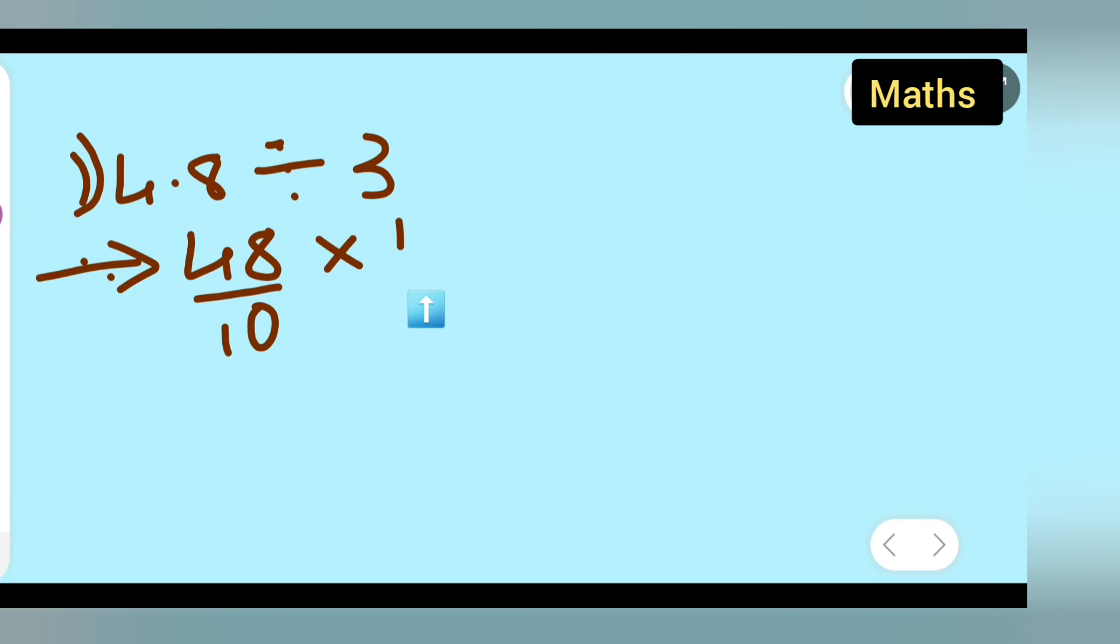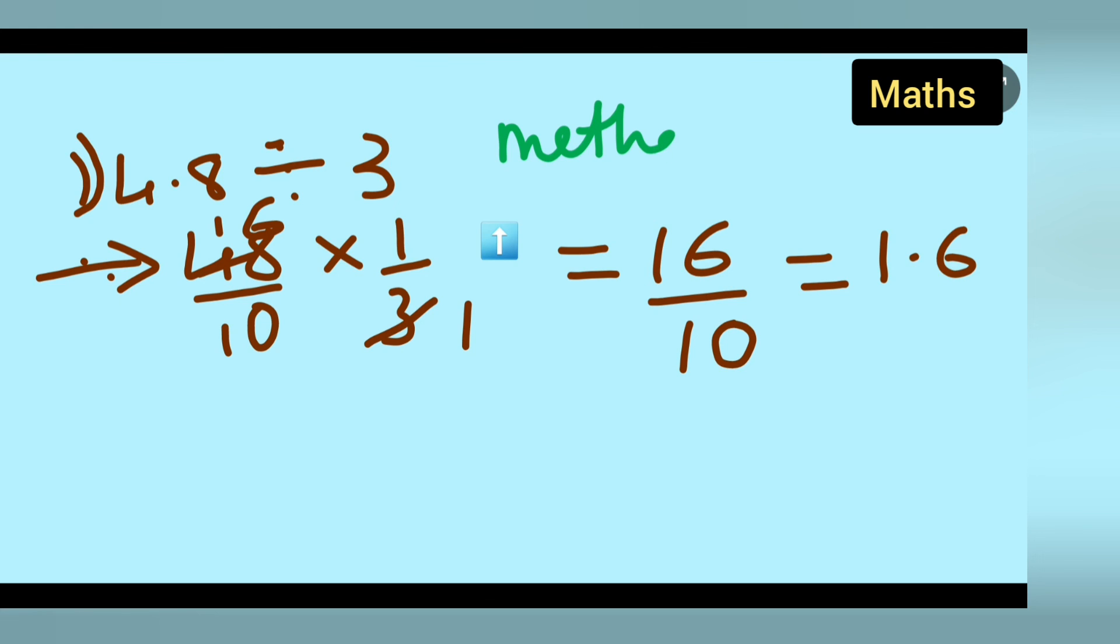3 ones are 3, and 3 sixes are 18. Your answer is 16/10, which you can write in decimal form as 1.6. This is method 2. I hope you all have understood both methods, and whichever is easier for you, you can use that method.